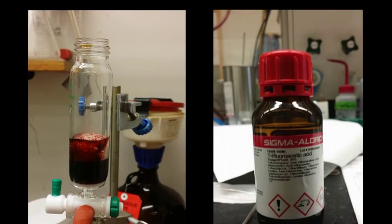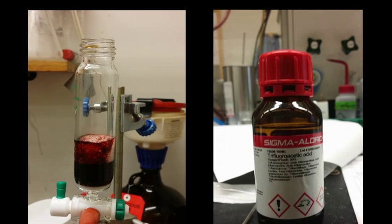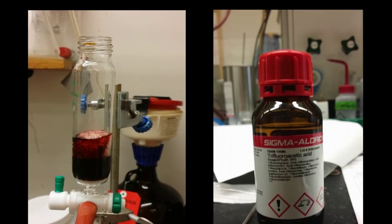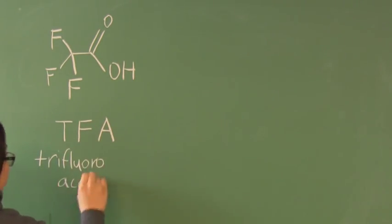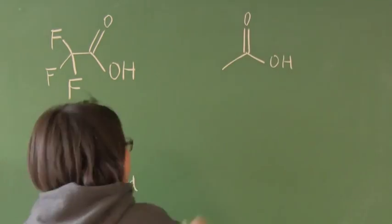For our peptide, we use TFA to cleave off the resin or to make the peptide cyclic. Let's take a look at the structure of TFA to figure out why we prefer TFA over acetic acid.